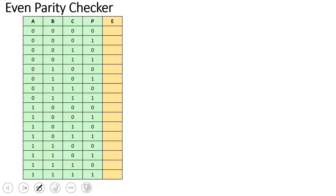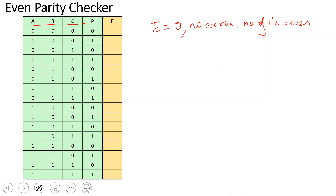That is the even parity checker. A, B, C are the information bits and P is the parity bit — this is the 4-bit received message. For the checker: if in this 4-bit message the number of 1s is even, then E equals 0, meaning there is no error. E equals 1 when there is an error, meaning the number of 1s is odd.